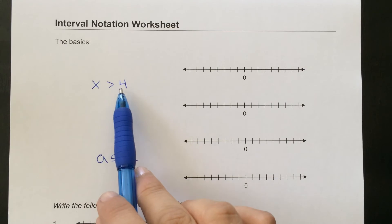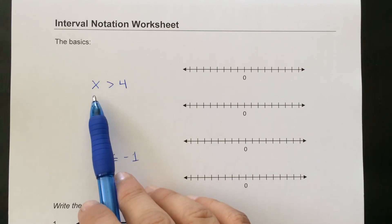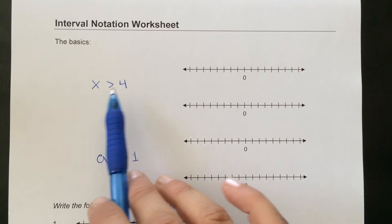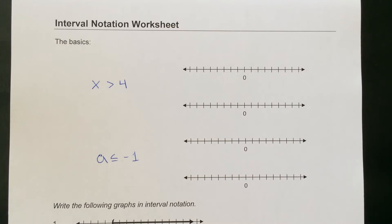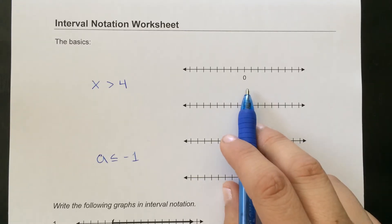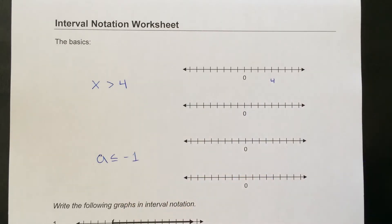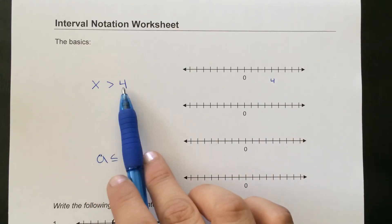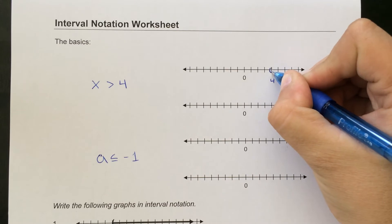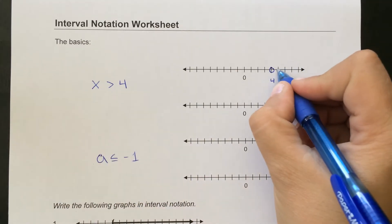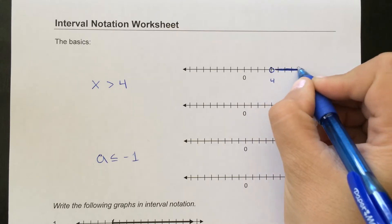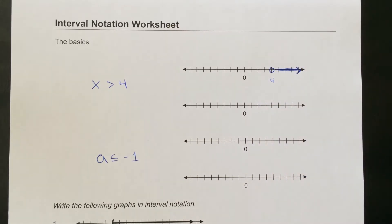For x greater than 4, we're saying all numbers bigger than 4 — 5 is bigger than 4, 7 is bigger than 4. But 4 itself wouldn't work because 4 is not bigger than 4. If we wanted to graph that on a number line, we'd start at 4, and because we're strictly bigger than 4 — not allowed to equal 4 — most people would use an open circle. Then we shade to the right with an arrow to indicate it goes on forever, all the way to infinity.